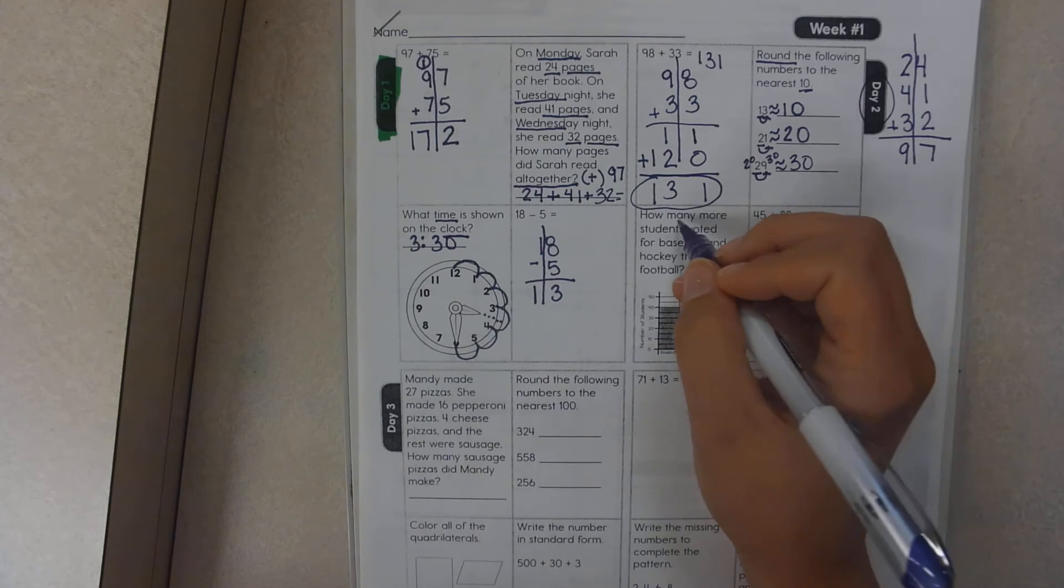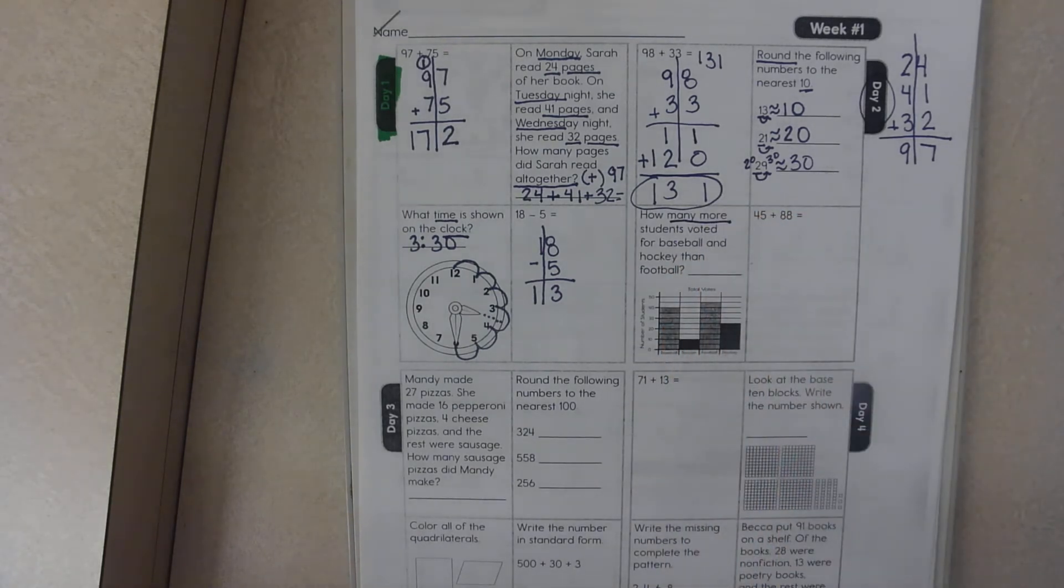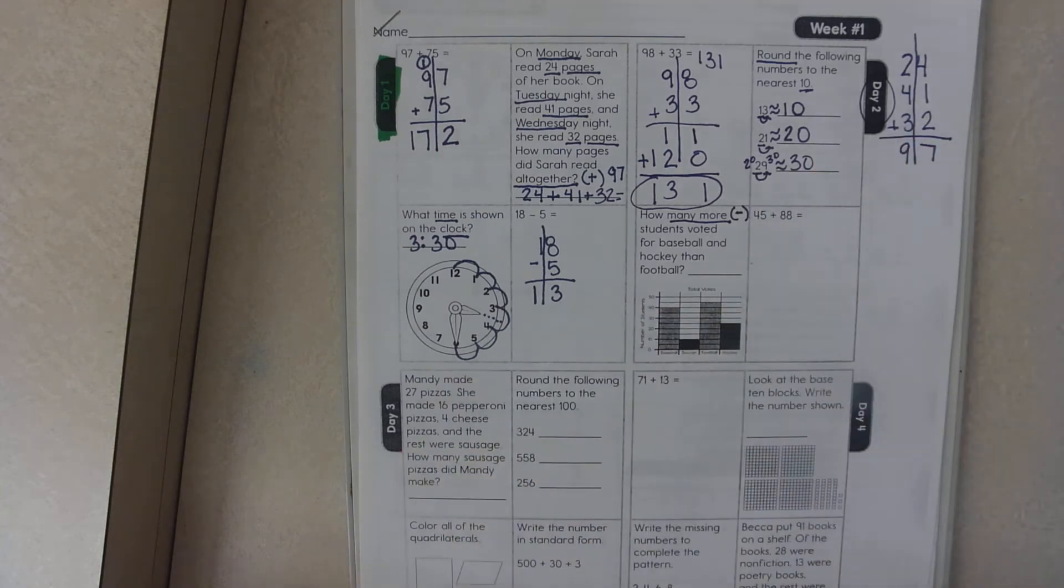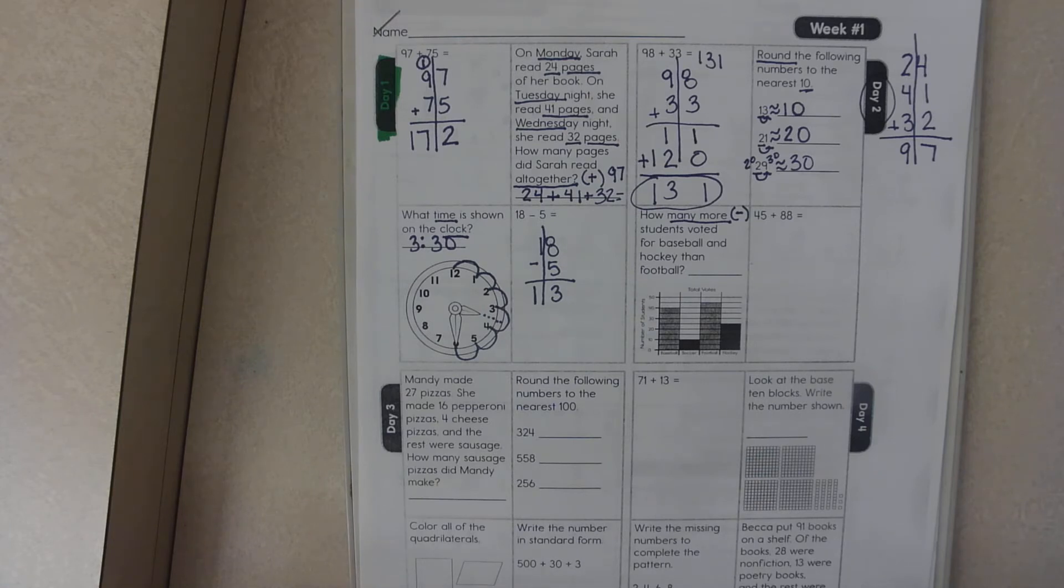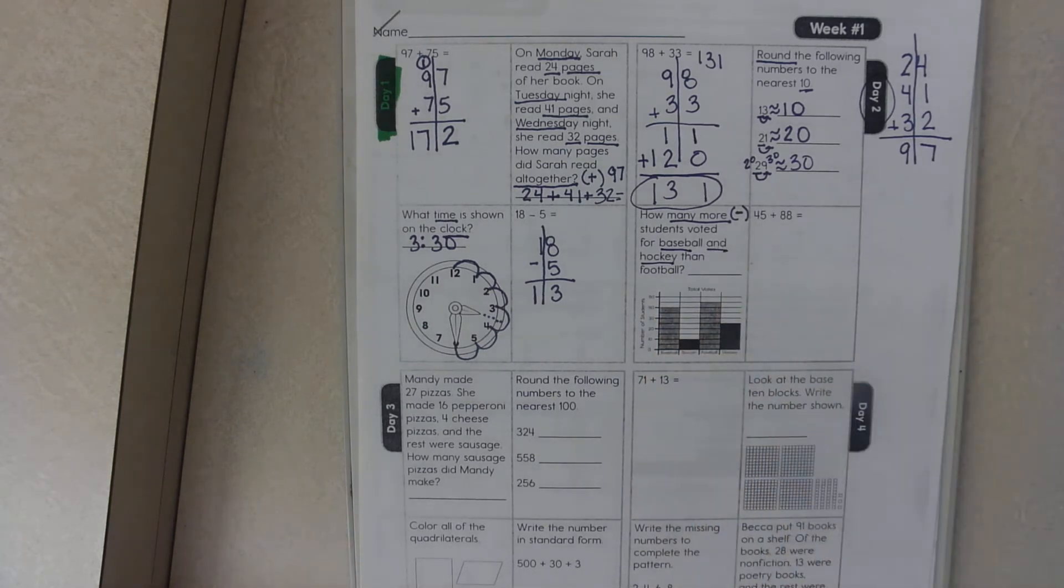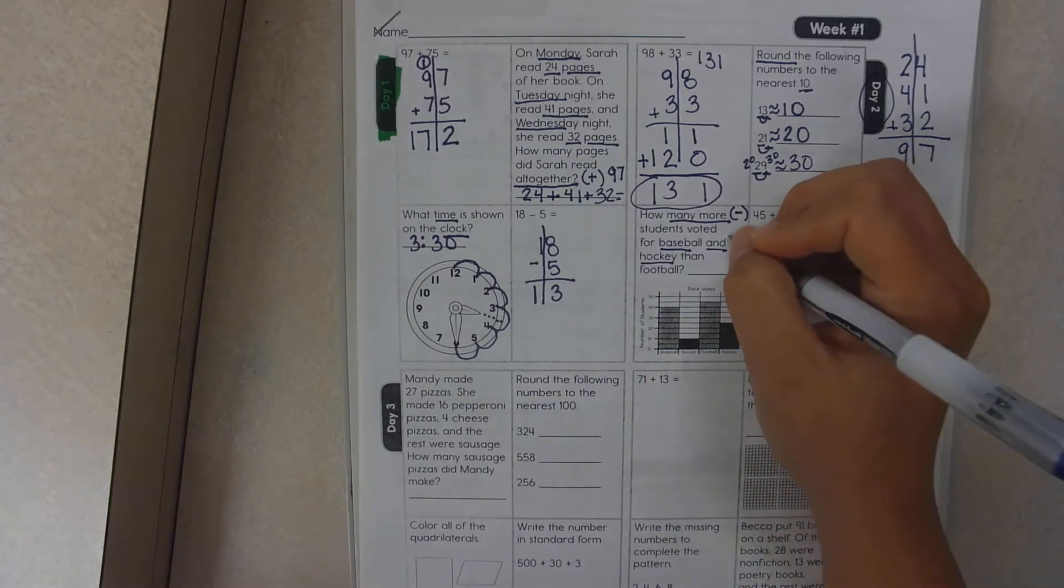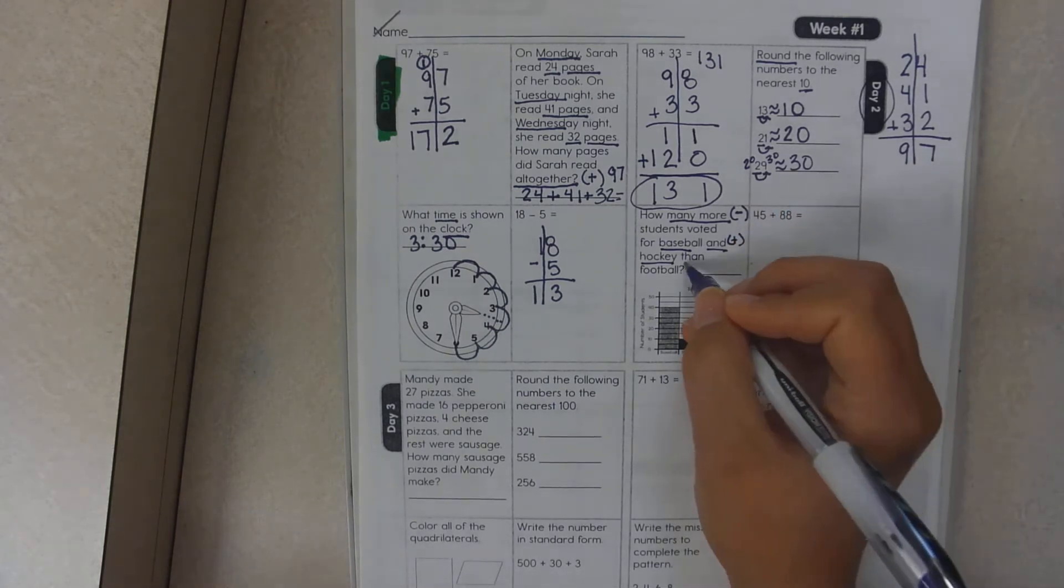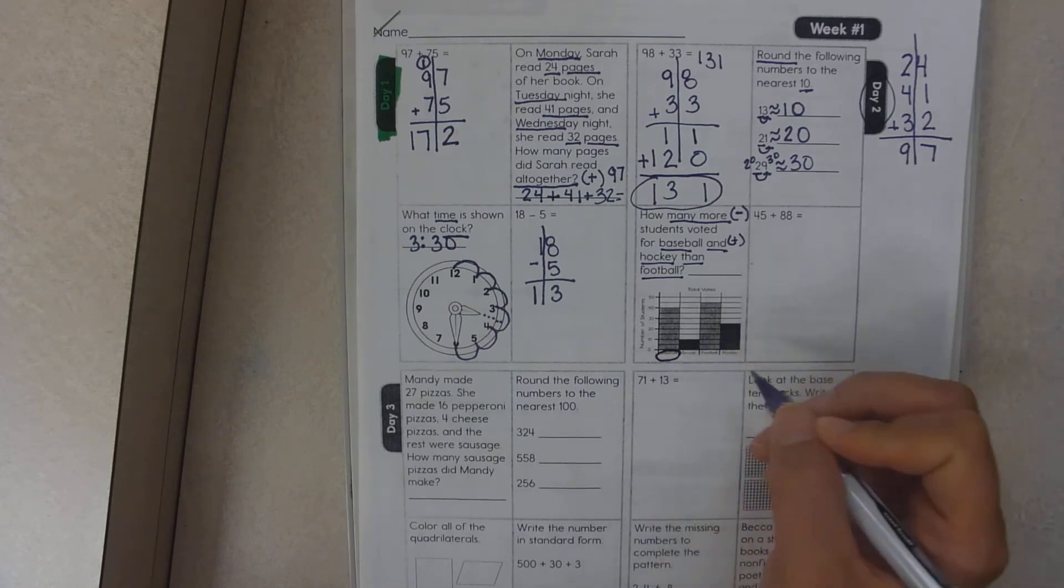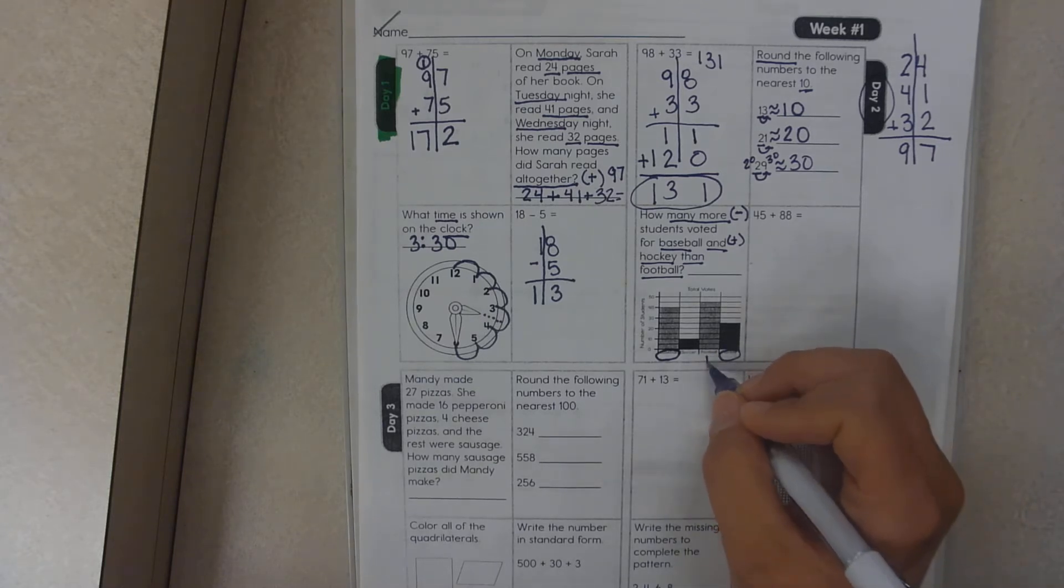How many more? Many more. What does that mean? Many more, as of right now, with your current knowledge, should mean subtraction. How many more students voted for baseball and hockey? That means subtraction. And what does that mean? That means to add right now. Then football. So we're going to add baseball and hockey, and then we're going to subtract football.